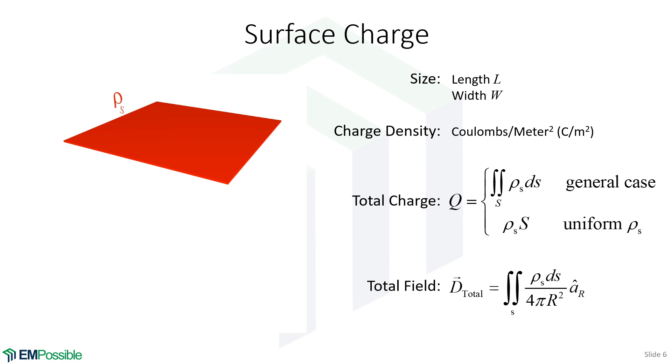To calculate total charge, it is a surface integral, so it's a double integral of the surface charge density ρ_s times the differential surface ds. In the special case where that surface charge is uniform, the overall charge is just the surface charge density times the surface area S.